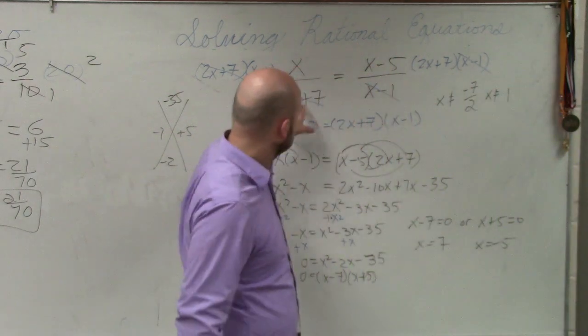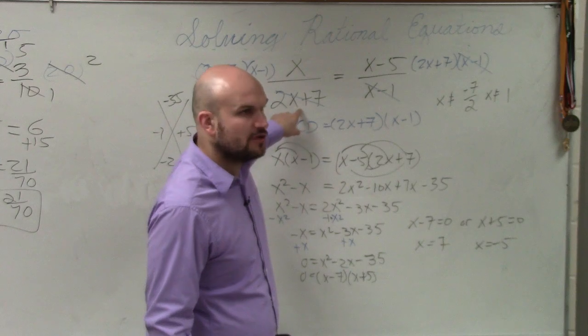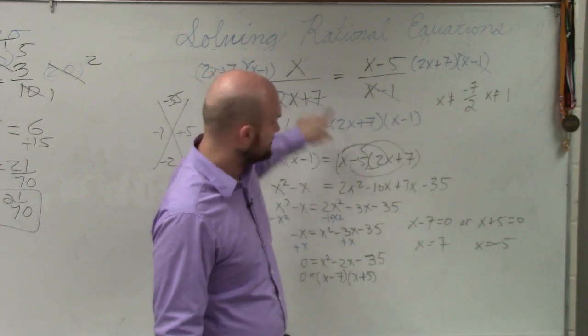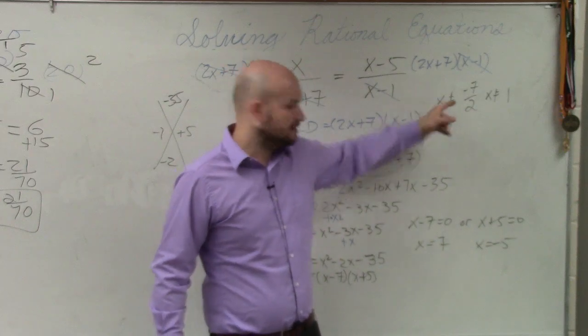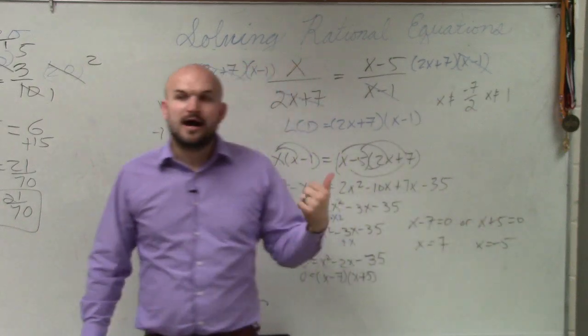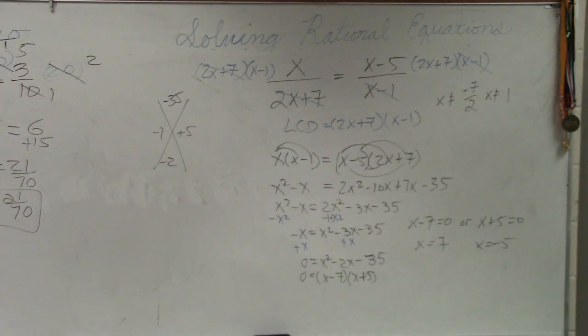If you were to take 2x plus 7 and set it equal to 0 and solve for x, you get negative 7 halves. Are either one of these those numbers? No. So these are going to be your two solutions. However, if that number is up there, then that would be a case of no solution.